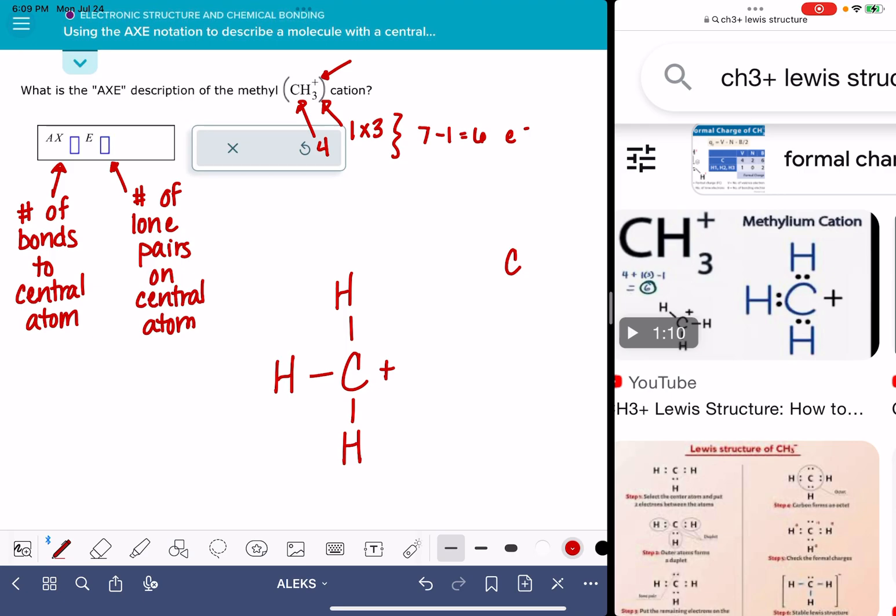I'm going to arrange the atoms by putting the carbon atom in the center, connecting the hydrogen atoms to the carbon atom with single bonds. That uses two, four, six electrons. That's exactly how many I have. That's it for this particular structure. I feel like the positive charge is a little distracting.